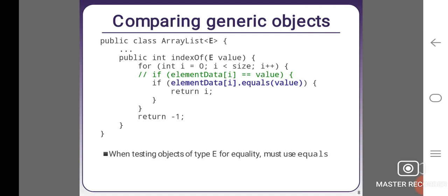Comparing generic objects. public class ArrayList<E> { public indexOf(E value) { for (int i = 0; i < size; i++) { if (elementData[i] == value) // if elementData[i].equals(value) return i; } return -1; } } When testing objects of type E for equality, must use equals.